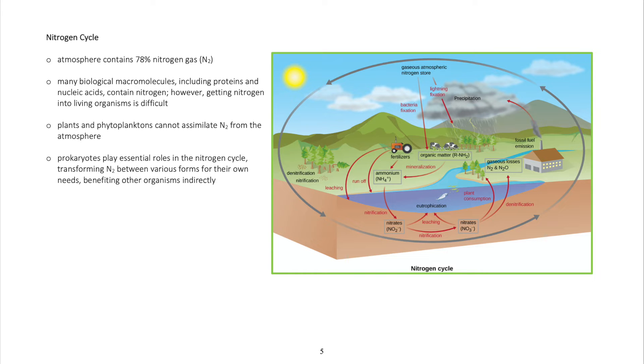Nitrogen cycle: Atmosphere contains 78% nitrogen gas (N2). Many biological macromolecules, including proteins and nucleic acids, contain nitrogen. However, getting nitrogen into living organisms is difficult.